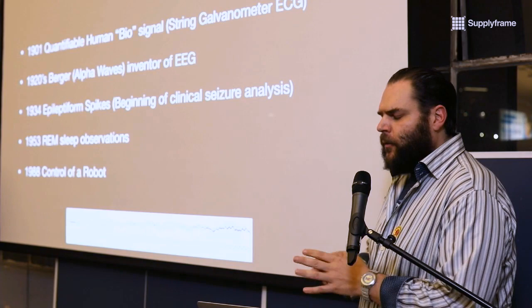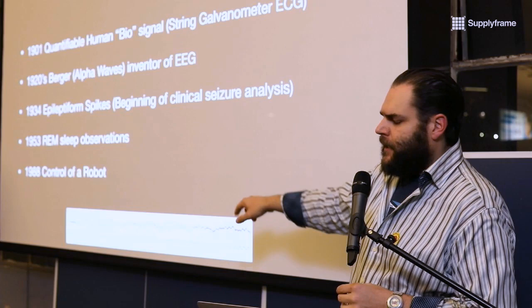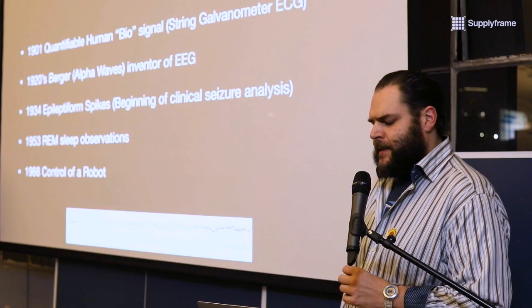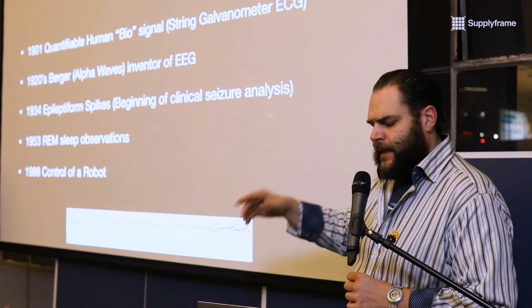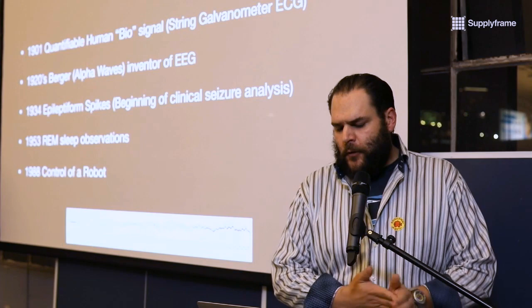In the mid-20s, alpha waves were first detected and kind of popularized and published in the late 1920s by Berger. At the bottom is actually the first known published recording that was taken in 1924 and published in 1929. The top part of the wave that you see is from what was actually detected and recorded. Just below that is a 10 hertz reference signal. That looks pretty close to possibly an alpha wave being recorded there.